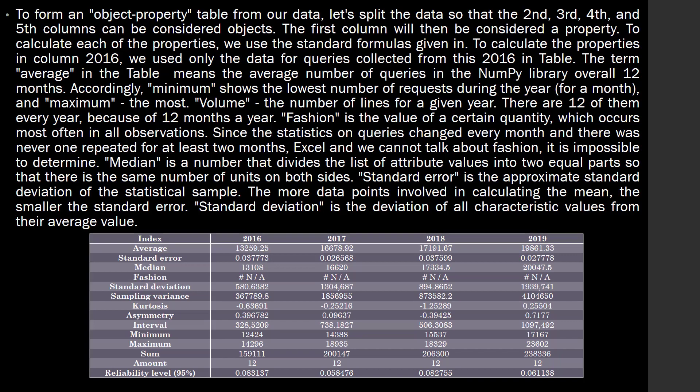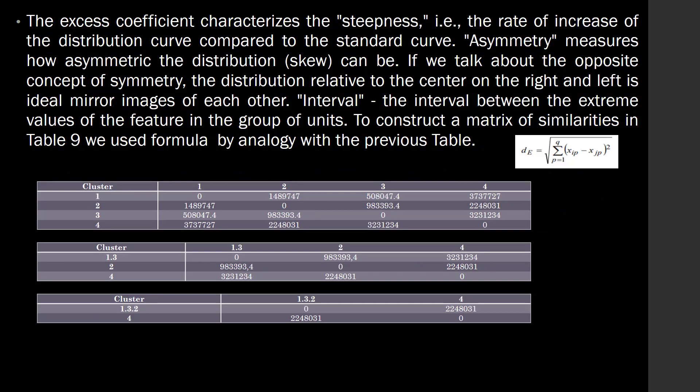To form an object-property table from our data, we split the data into the second, third, fourth, and fifth columns, which can be considered as objects. The excess coefficient characteristic describes the steepness — the rate of increase of the distribution curve compared to the standard curve. Asymmetry measures how asymmetric the distribution can be. The interval between the extreme values represents the range in the group of units. To construct a matrix of similarities, we use the formula by analogy with the previous table.